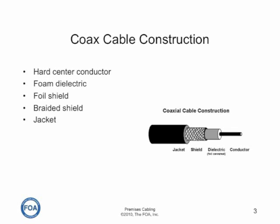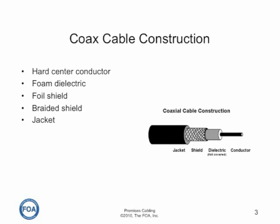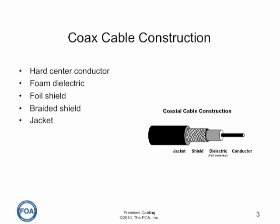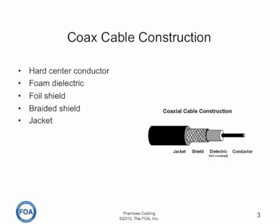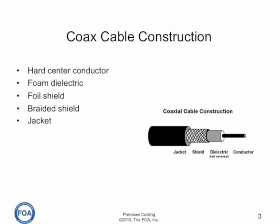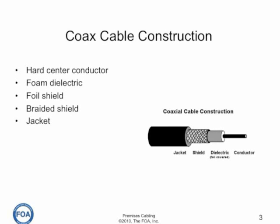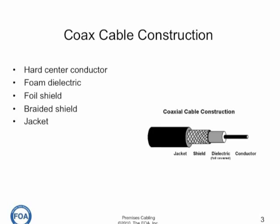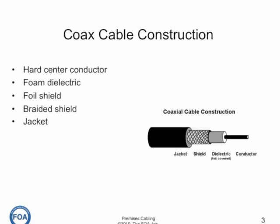Coax cable is called coax because of its coaxial construction. Instead of twisted pairs, it has a center conductor covered by a dielectric — an insulator — that locates the center conductor in the center of the cable, covered by shielding, and then finally a jacket. The shielding is one of the important things because it keeps extraneous signals from radiating from the cable. The shielding is usually a combination of foil of some metal, usually aluminum, covered by a wire mesh, which is the outside conductor.